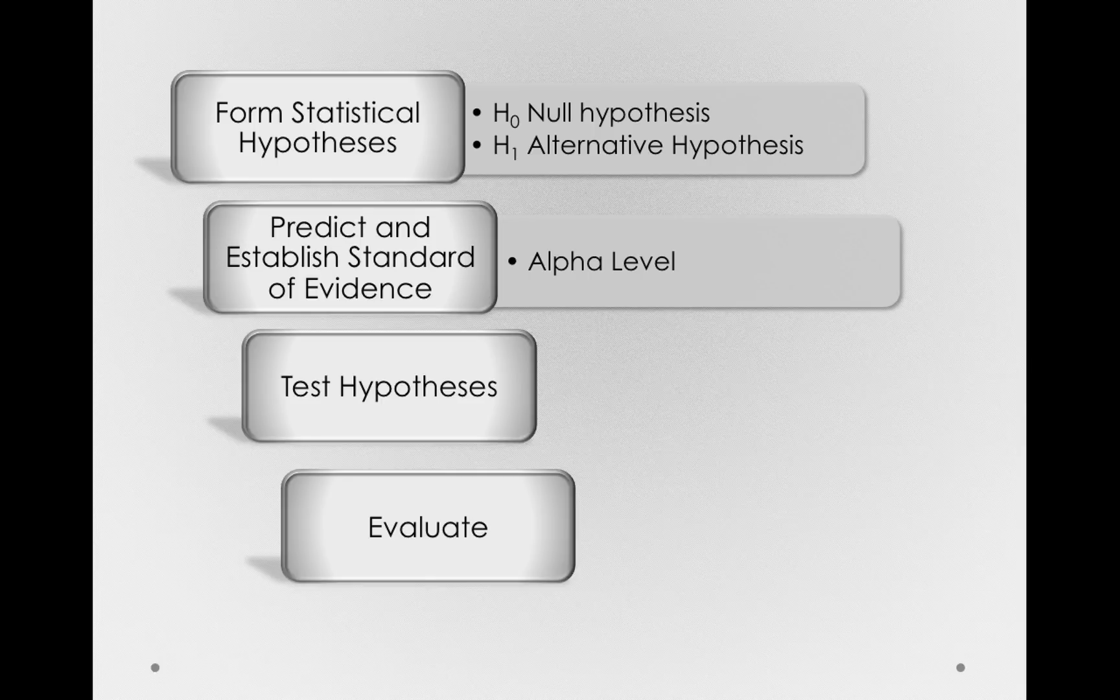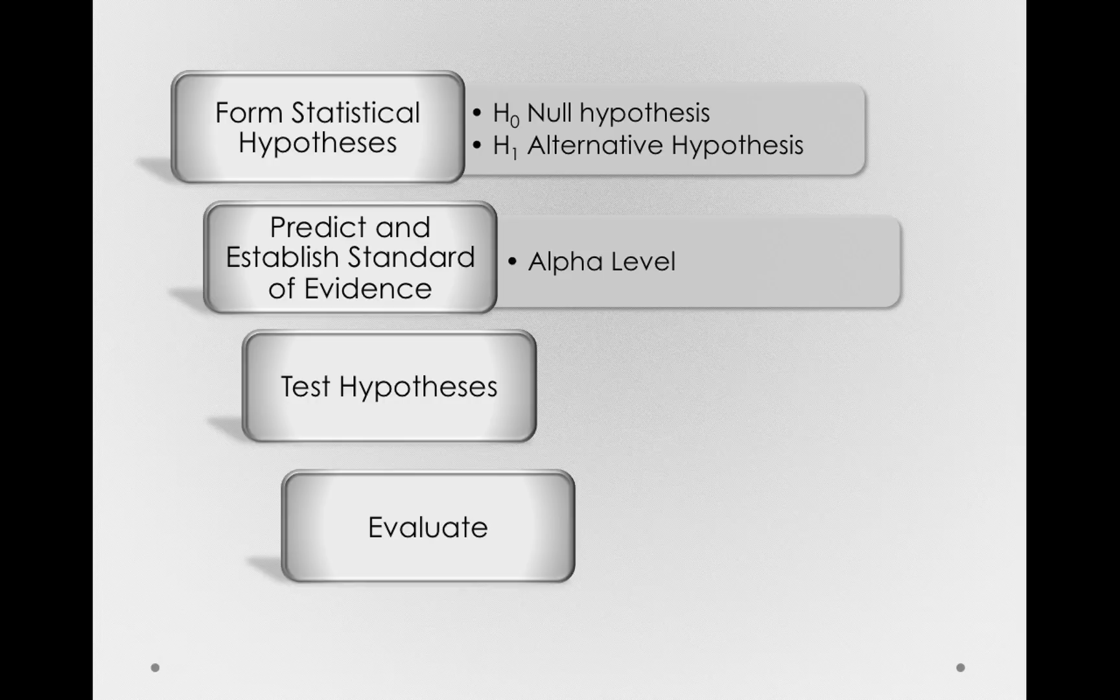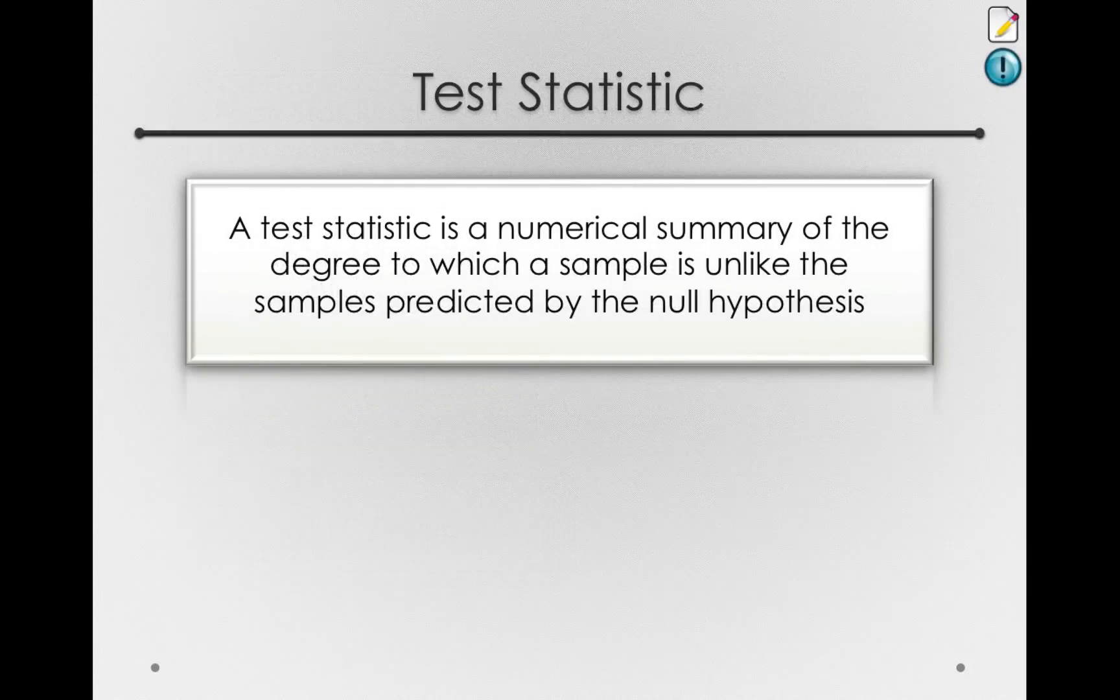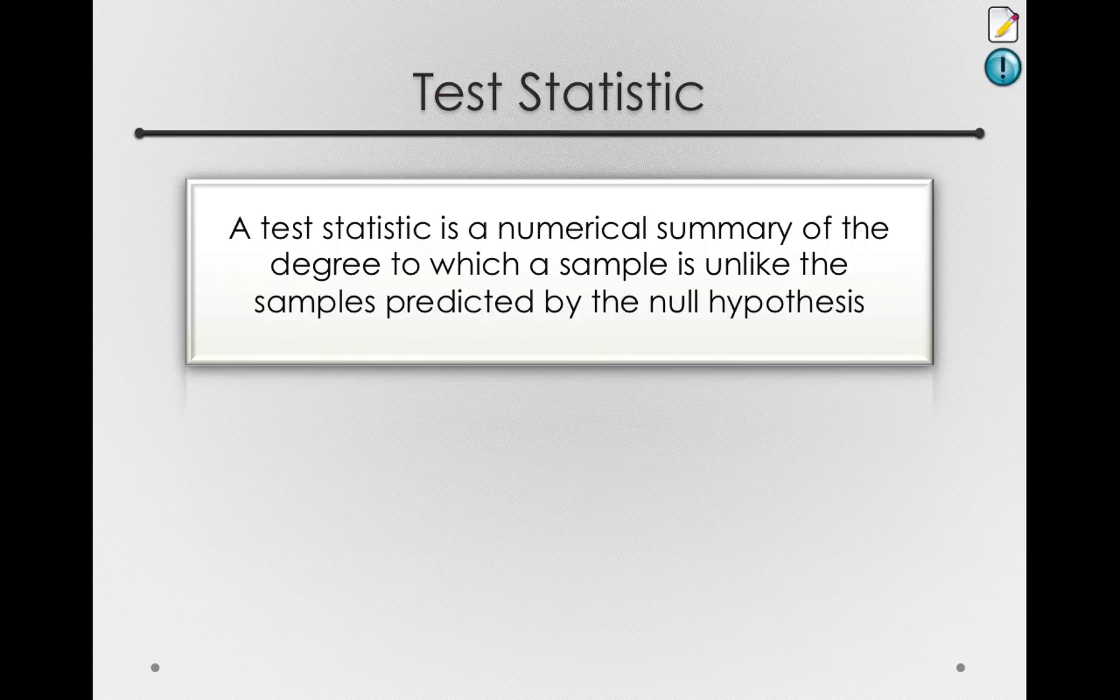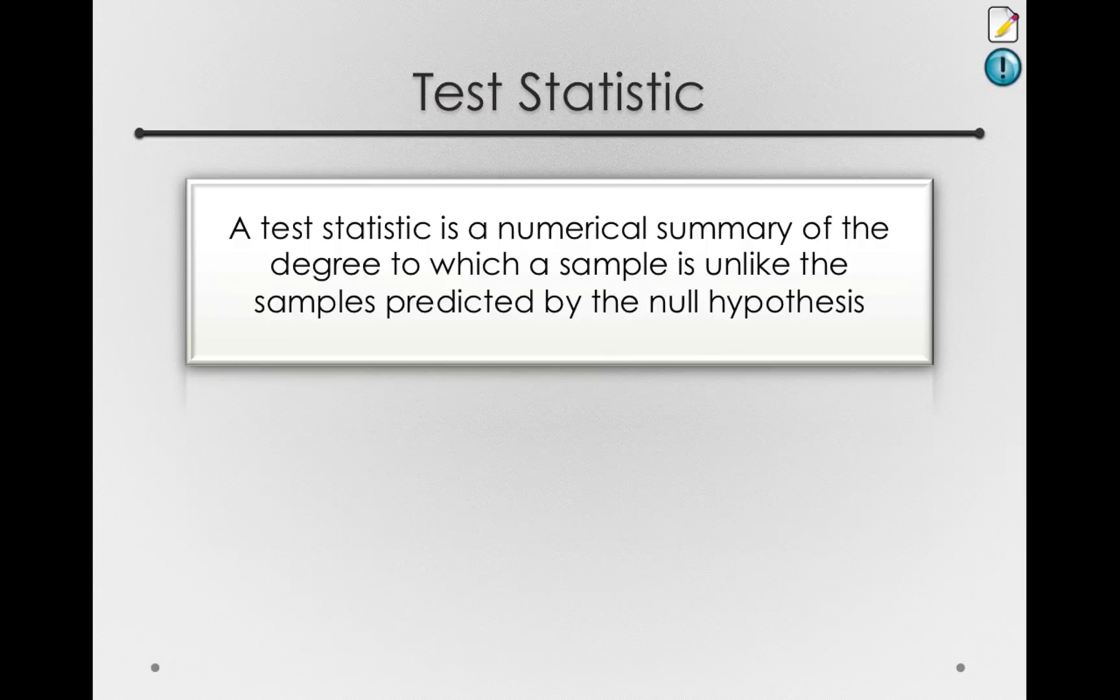Our next step involves testing our hypotheses by generating a numerical summary of the evidence against the null hypothesis. To do this, we develop something called a test statistic, which is just that. A test statistic is a numerical summary of the degree to which our sample is unlike the samples predicted by the null hypothesis.